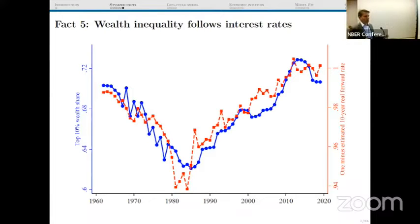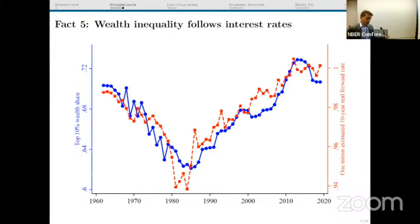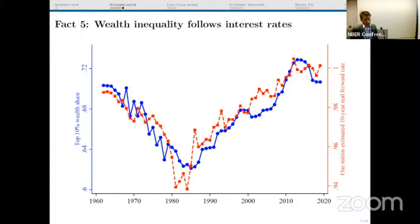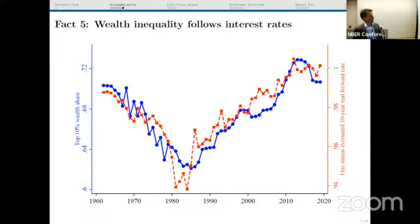Social security is a very long-term asset itself and represents a huge part of the portfolio of people in the lower part of the earnings distribution. This is related to the last fact we try to explain: a very strong relationship in the time series between the level of interest rates and the level of wealth inequality. On the left-hand side of this graph you have the share of wealth going to the top 10 percent, and on the right you have one minus the yield on a 10-year real bond.